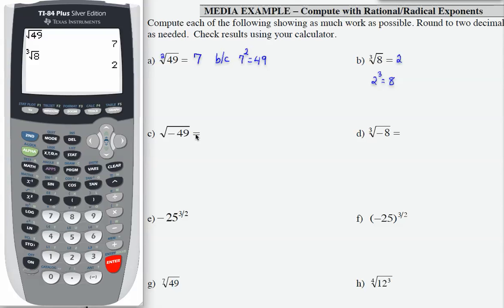Looking at part C, the square root of negative 49, well, the only two numbers it could be between would be 7, and 7 squared is 49, which is not equal to negative 49. Or negative 7, negative 7 squared would also be 49, which is not equal to negative 49.